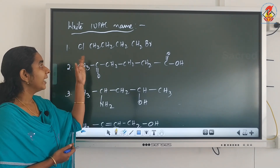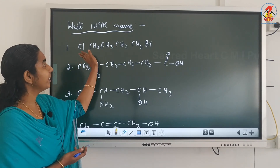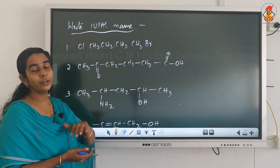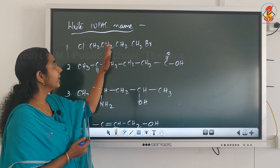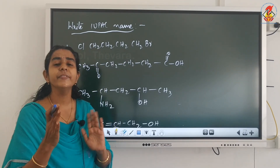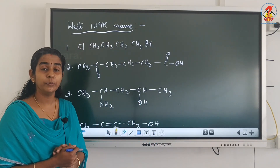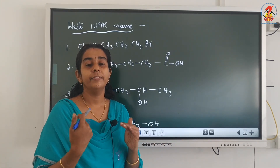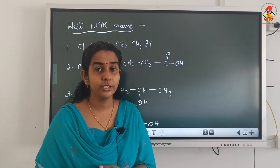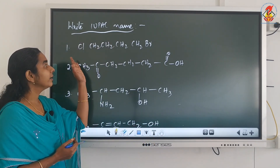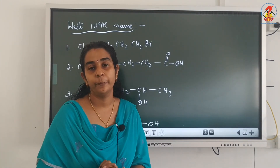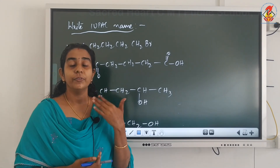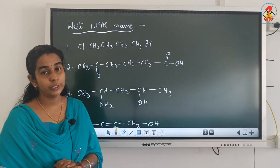We can do the numbering from left to right or right to left. Bromine and chlorine get positions 1 and 4 in either direction — these are equivalent positions. When we get the same numbers from either direction, those are known as equivalent positions. So which numbering should we select? The substituent that comes first alphabetically should get the lowest possible number. Between bromine and chlorine, bromine comes first alphabetically.